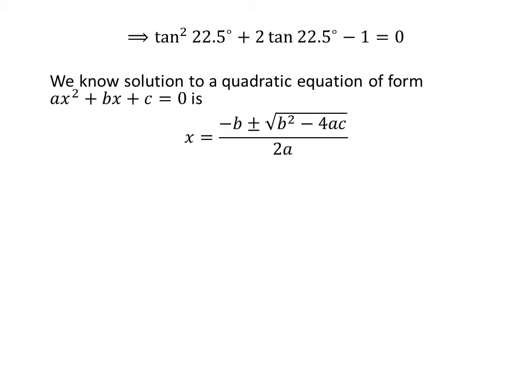The above equation is a quadratic equation in tangent of 22.5 degrees. We know the roots of the quadratic equation in general form: a times square of x plus b times x plus c is equal to 0 are given by minus b plus or minus square root of square of b minus 4 times a times c, upon 2 times a.